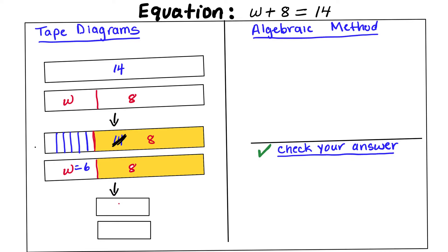So here's your w, and that is 6, and both have to be equal. Now let's go ahead and do the algebraic method now.